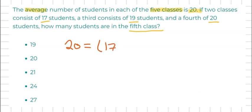plus 17 plus 19 plus 20 plus X, which is what we're looking for, our fifth class, and we're going to divide it all by five.